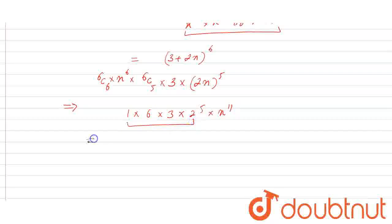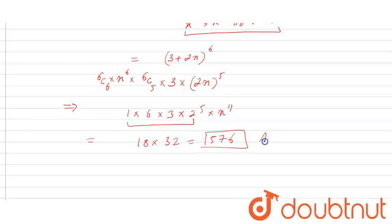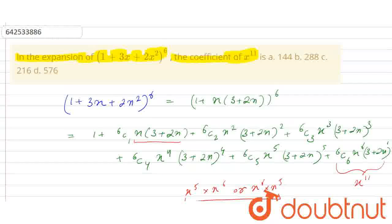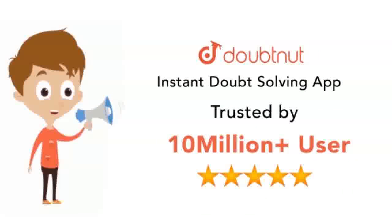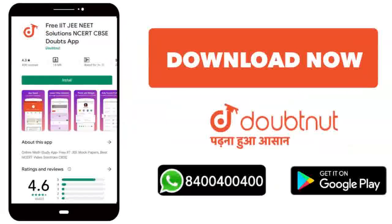So this will be my coefficient: 6 × 3 × 2⁵ = 6 × 3 × 32 = 576. So 576 is the coefficient of x^11, and this is our answer. Checking the options, option D is correct — 576 is the coefficient of x^11 in the given expansion. Thank you. If you want to download the Doubtnet app or WhatsApp, check out doubts at 844444.